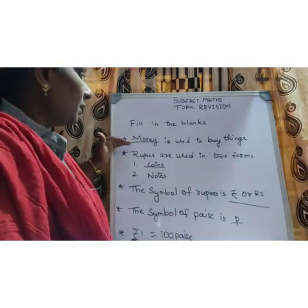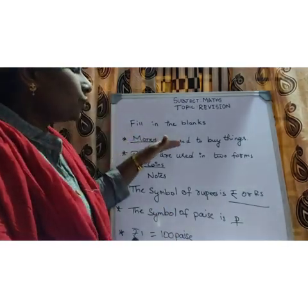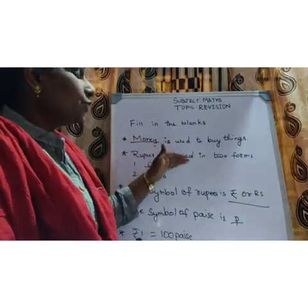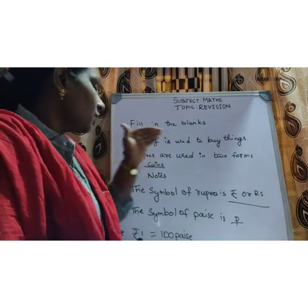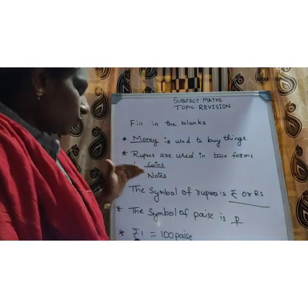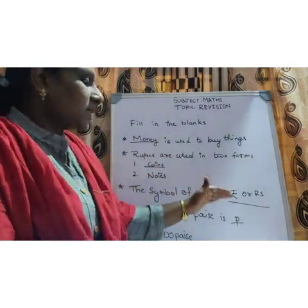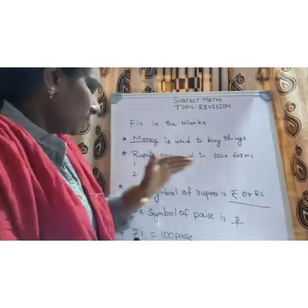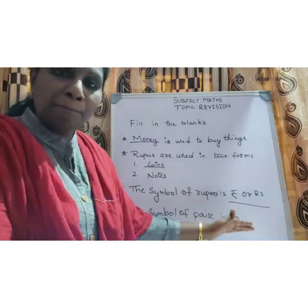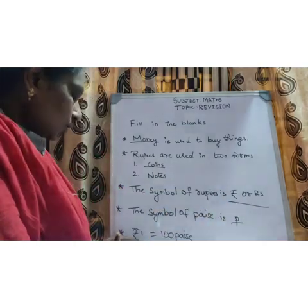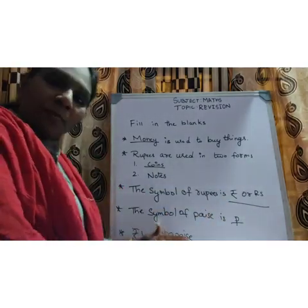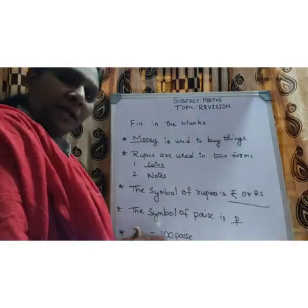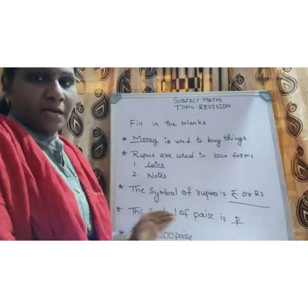Understood, children? Once again we will repeat. Money is used to buy things. Rupees are used in two forms — coins and notes. The symbol of rupees is either the rupee symbol or Rs. The symbol of paise is P. 1 rupee equals 100 paise.